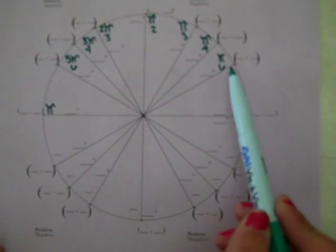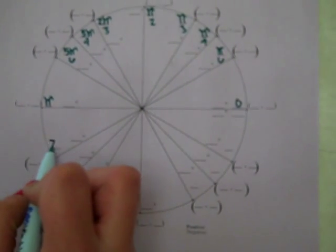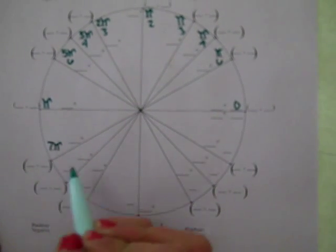So you take the opposite. 1 plus 6 is 7. So you put 7π and you keep the denominator 6.